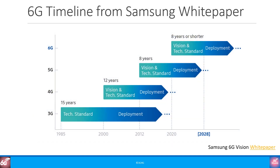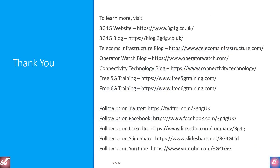In their 6G white paper, Samsung says that they expect ITU-R will begin their work to define a 6G vision in 2021. Taking into account the trend of speeding up of developments of technical standards for each new generation, they expect that the completion of 6G standard and its earliest commercialization could happen as early as 2028, while massive commercialization may occur around 2030. There is a good consensus within the research community and the industry that 6G will happen somewhere between 2028 and 2032.